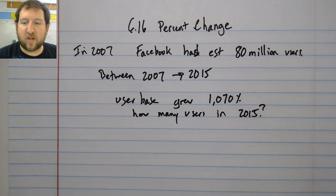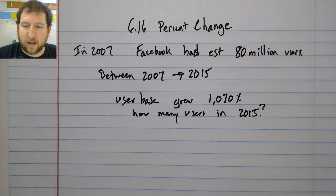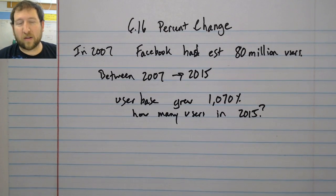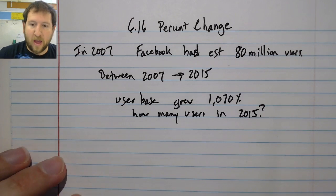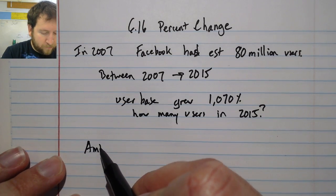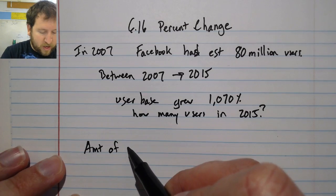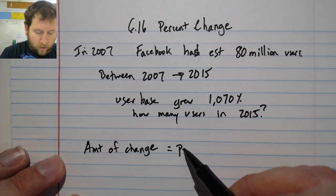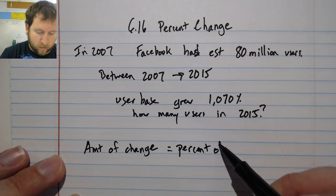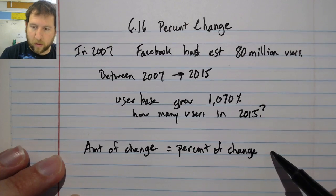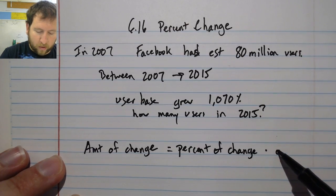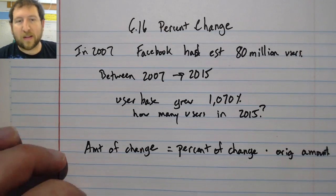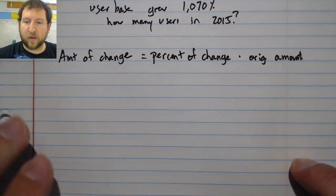We have a simple formula that we're going to use and apply to these numbers for this section. The formula looks like this: amount of change equals the percent of change times the original amount. Let's apply this to a simple example first.